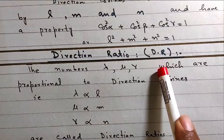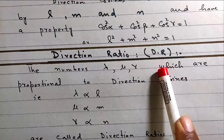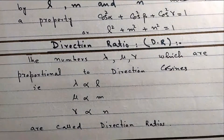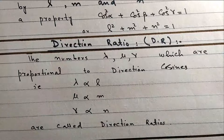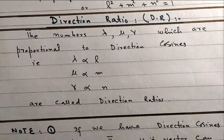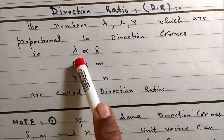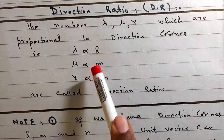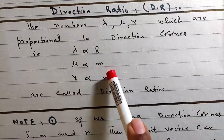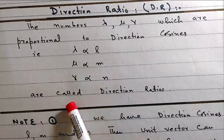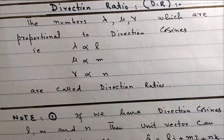Direction ratios are abbreviated as D.R.C. The numbers lambda, mu, gamma which are proportional to direction cosines — that is lambda proportional to L, mu proportional to M, and gamma proportional to N — are called direction ratios.